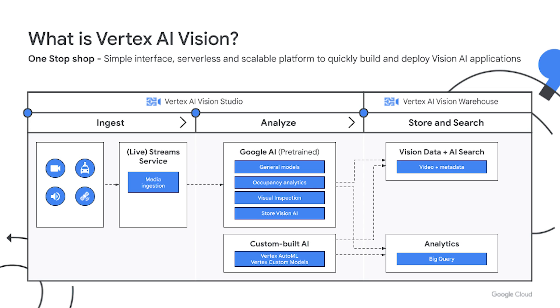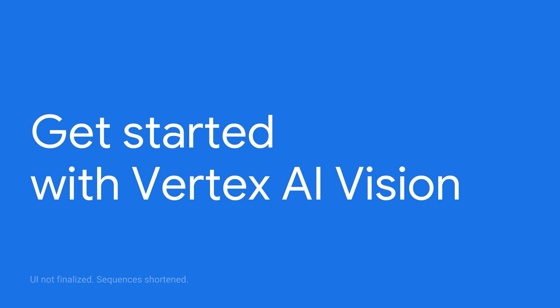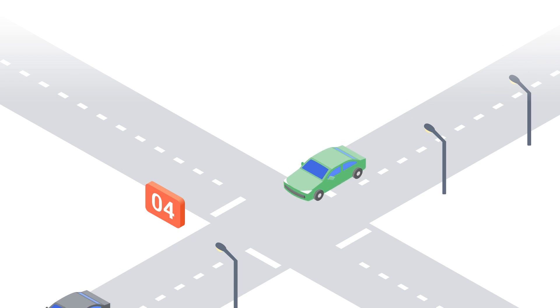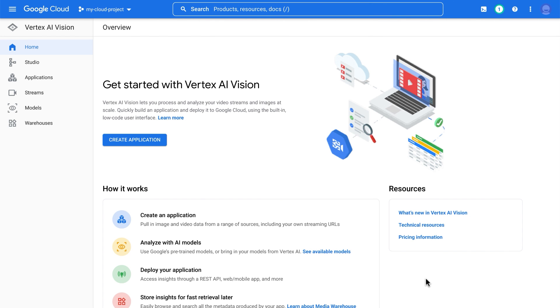Now we're going to show you how to build and deploy your first application with a quick demo. In this video, I'm going to walk you through the process of creating and deploying a Vertex AI Vision application. Today we're going to build a smart city traffic analytics application using live video from cameras and AI to help city planners better understand traffic patterns in order to reduce congestion and increase citizens' safety.